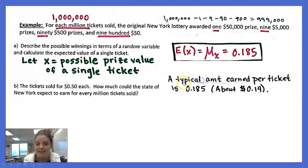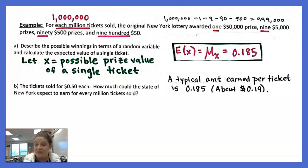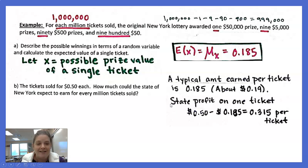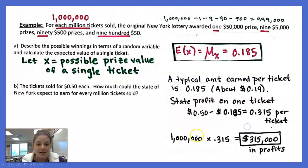So a typical amount earned per ticket is about 19 cents. Every time you play the lottery, you're looking to earn about 19 cents per ticket. The tickets sold for 50 cents each. So how much could the state of New York expect to earn for every million tickets sold? That 19 cents is what they pay out per ticket, so the state profit on one ticket is 50 cents minus 0.185, which is about 31.5 cents per ticket.